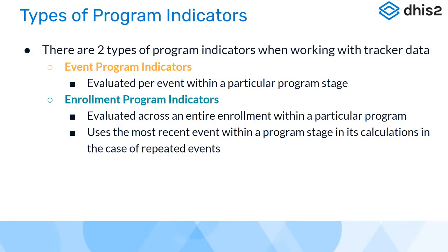What are the two types of program indicators? One is the event program indicator and the second is the enrollment program indicator. An event program indicator evaluates each event within a particular program stage. An enrollment program indicator evaluates the entire enrollment within a particular program. If you want to compare data between two program stages, you would use an enrollment program indicator, not an event program indicator.